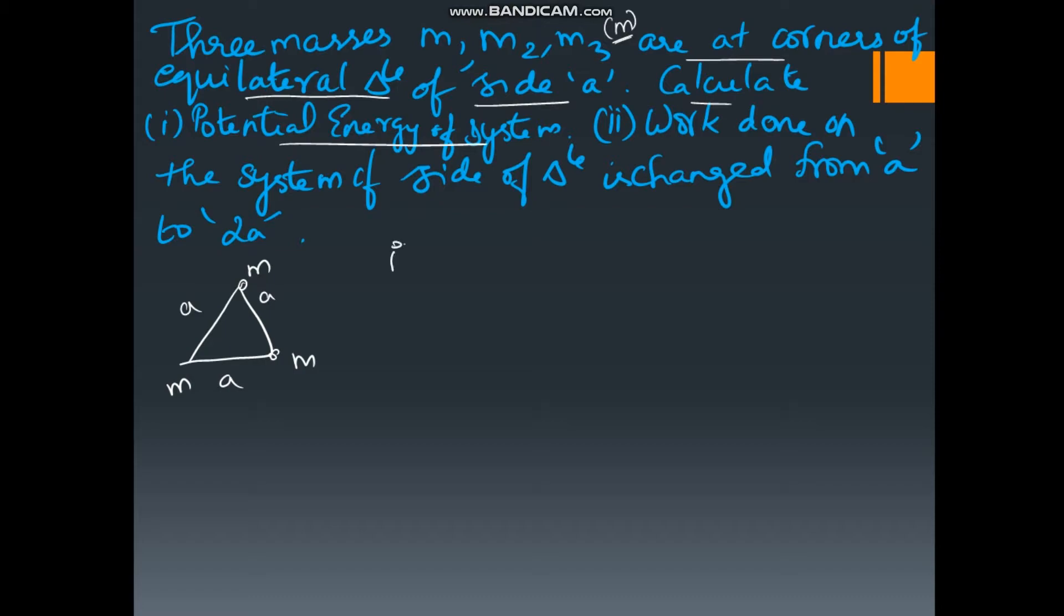Potential energy of the system is minus G M squared by A, potential energy due to these two masses, plus potential due to these two masses, that is minus G M squared by A, plus minus G M squared by A. So which is minus 3 G M squared by A.